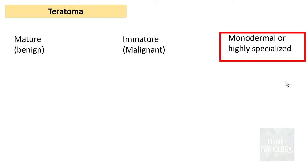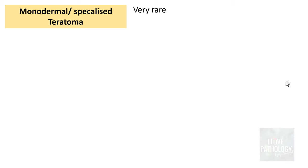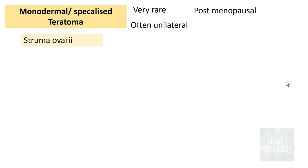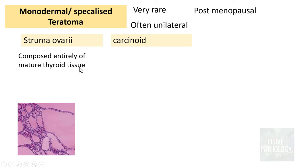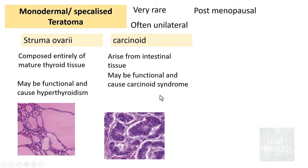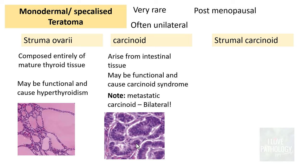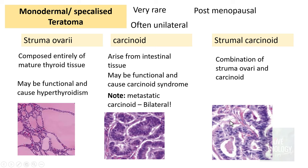Moving on to monodermal or highly specialized teratomas. These are very rare tumours, often found in postmenopausal women, and most often unilateral. There are different types: struma ovarii and carcinoid. Struma ovarii are tumours composed entirely of mature thyroid tissue, which can be functional and if so, can cause hyperthyroidism. Carcinoid arises from intestinal tissue, which may also be functional, and if functional, produces carcinoid syndrome due to excess serotonin. The combination of struma ovarii and carcinoid is called strumal carcinoid, containing both thyroid and carcinoid components.